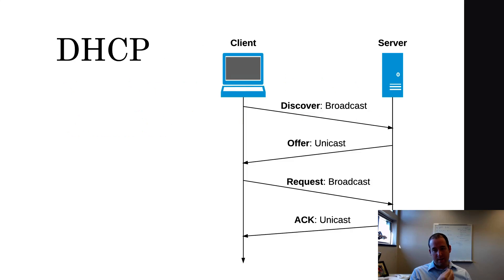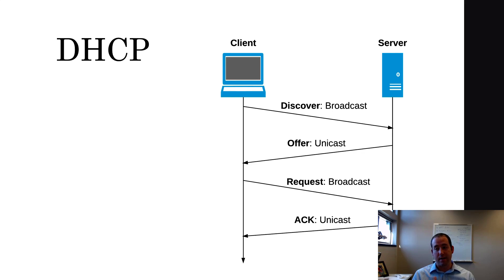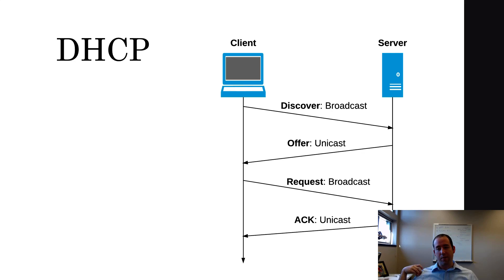The way it works is four messages are sent back and forth. The first message is called a DHCP Discover. This is essentially your computer saying "help, I'm lost and alone and I don't know who I am or where I am." Your computer gets to the network and shouts out: I don't know where I am. That's the DHCP Discover. And as long as a DHCP server is on the network, it's going to hear that discover. Your first message has to be a broadcast because you don't know anything — you don't know anybody's IP address or MAC address.